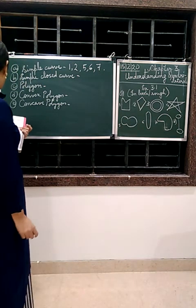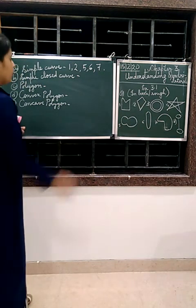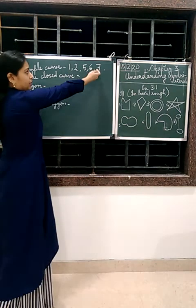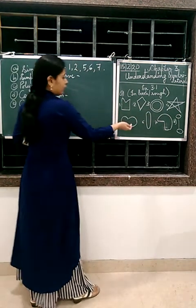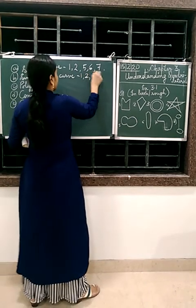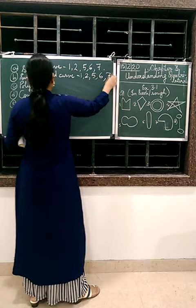Then comes the simple closed curve. Only these will be the simple closed curve. They all are simple and they all are closed. So 1, 2, 5, 6, 7.